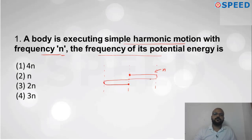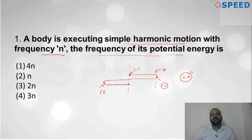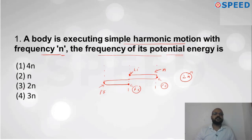If you look at the diagram, the potential energy is getting maximum two times — once at each extreme position. So the frequency of the potential energy will be 2N. Similarly, kinetic energy is also getting maximum two times, so the answer for kinetic energy and potential energy is the same. Checking the options, option number three is correct for this question.